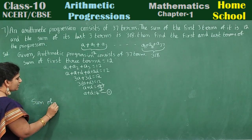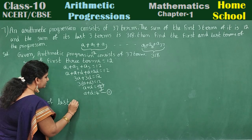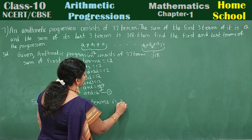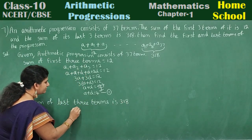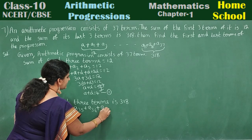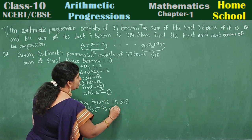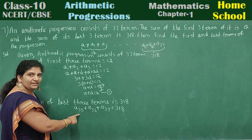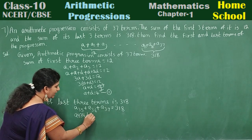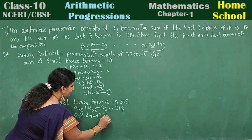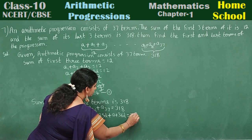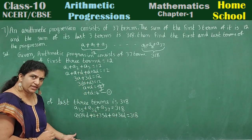Next step: sum of last three terms is 318. The last three terms are a35, a36, and a37. In general form: a35 is a plus 34d, a36 is a plus 35d, and a37 is a plus 36d, so their sum equals 318.